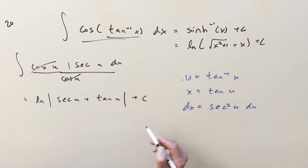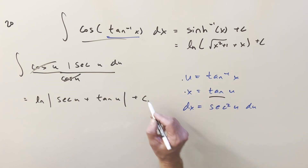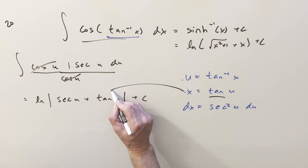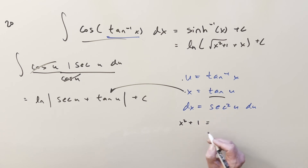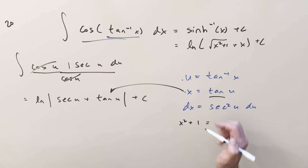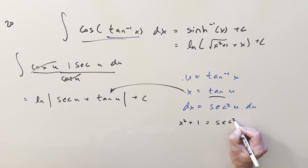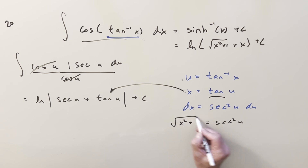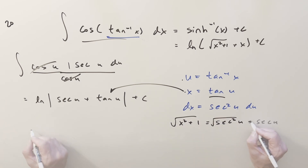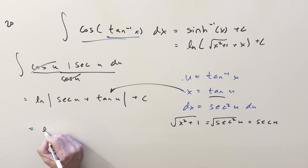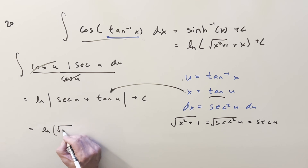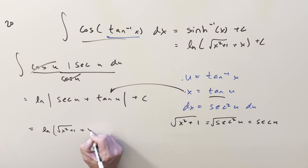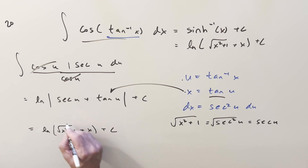Now let's back-substitute. For tan(u), we already have our value: it's x. And using the same identity, x²+1 = sec²(u), so taking the square root, sec(u) = √(x²+1). Plugging it all back in and dropping the absolute value since the expression is always positive, the solution is ln(√(x²+1) + x) plus c.